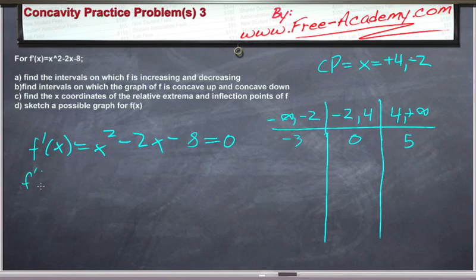So f prime of negative 3 is equal to positive 9 plus 6 minus 8. That's very clearly a positive number, so it's increasing on this interval. If we put in 0, that gives us negative 8, so that's decreasing. And then if we put in positive 5, that would be 25 minus 10 minus 8. That's positive 7, so we're increasing again.